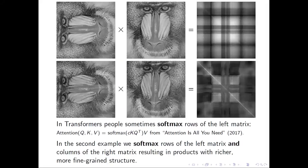Let's see. Multiplying transposed monkey by monkey gives the result which has plenty of information. In transformers people often apply softmax to the rows of the left matrix. Here we also need to apply softmax to columns of the right matrix to obtain richer, more fine-grained structure in the product.